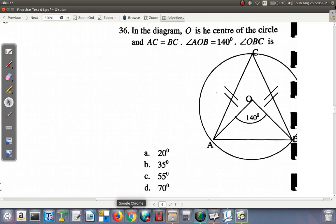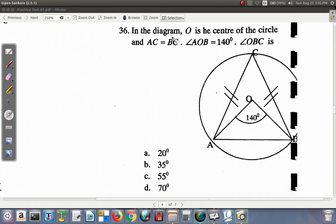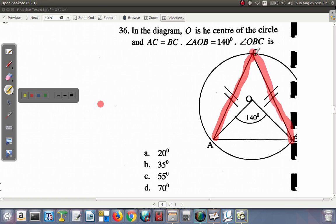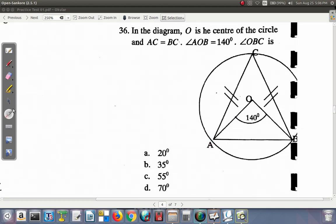Okay, question 36. In the diagram, O is the center of the circle. You have O here, the center of the circle. AC equals BC - you can tell by the two dashed lines that they are equal. Angle AOB is 140 degrees. They want angle OBC - this angle here.